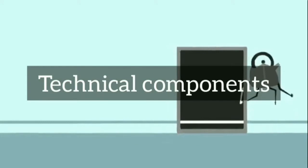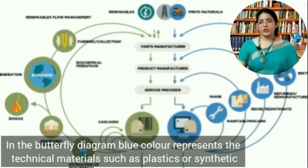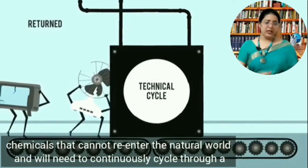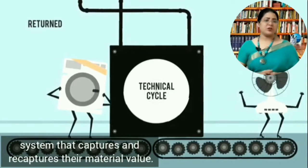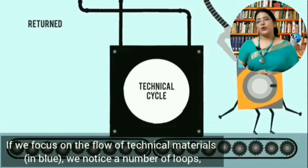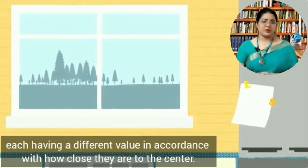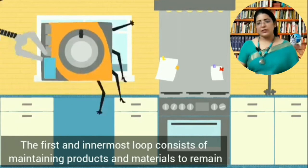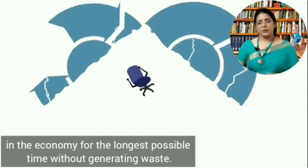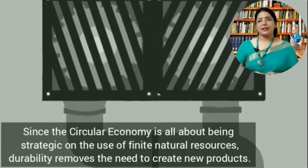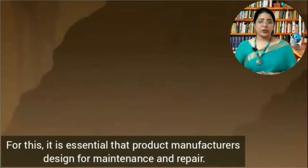In the butterfly diagram, blue color represents technical materials such as plastics or synthetic chemicals that cannot re-enter the natural world and need to continuously cycle through a system that captures and recaptures their material value. If we focus on the flow of technical material, we notice a number of loops, each having a different value in accordance with how close they are to the center. The first and innermost loop consists of maintaining products and materials in the economy for the longest possible time without generating waste. Since the circular economy is about being strategic with finite natural resources, durability removes the need to create new products. It is essential that product manufacturers design for maintenance and repair.